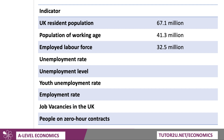The unemployment rate is currently 3.8% of the labour force. A key exam point: many students say unemployment is 3.8%, which is correct, but percentage of what? You should specify it's a percentage of the labour force. If you're looking at levels via the labour force survey, it's about 1.3 million people currently out of work, down from about 1.6 million in the depths of the pandemic in autumn 2020.